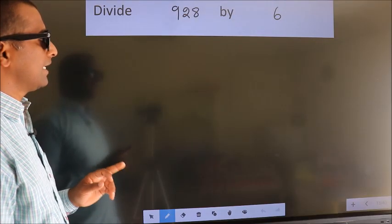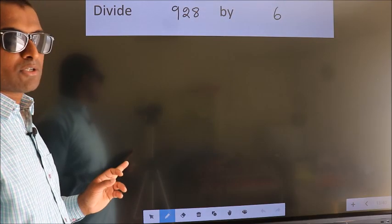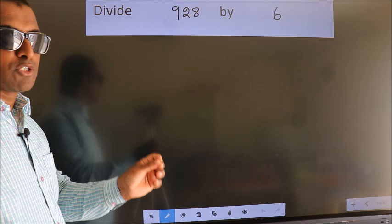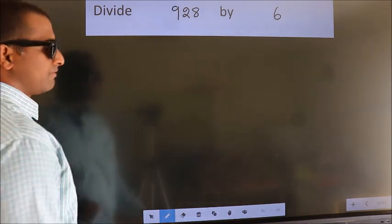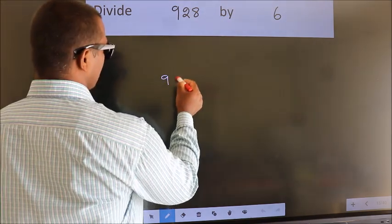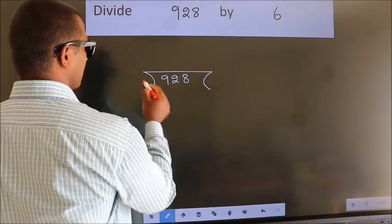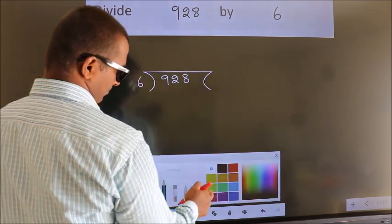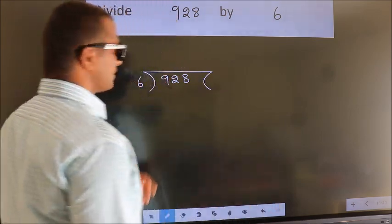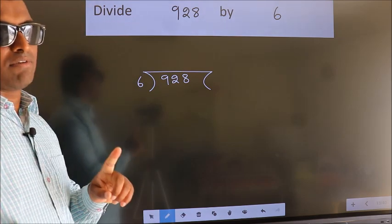Divide 928 by 6. To do this division, we should frame it in this way: 928 here, 6 here. This is your step 1.